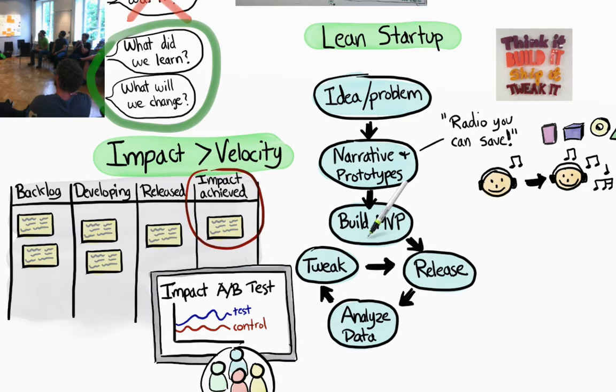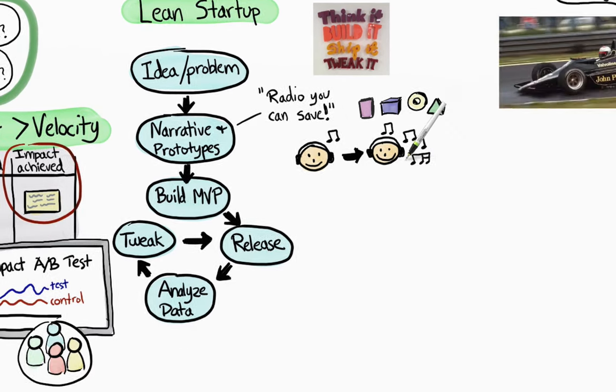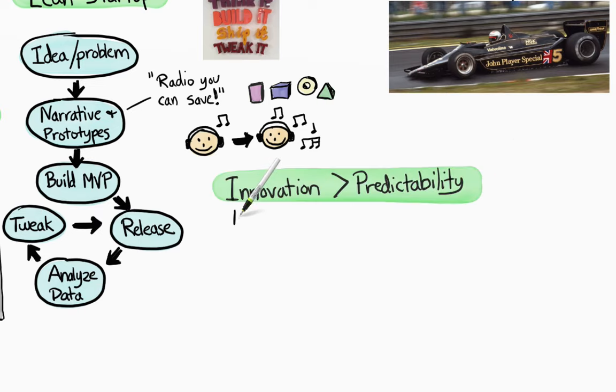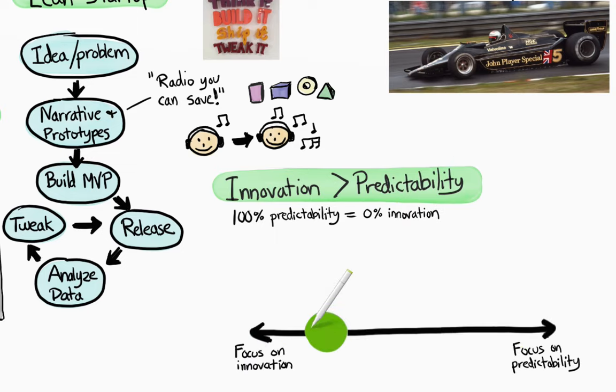So with all this experimentation going on, how do we actually plan? How do we know what's going to be released by which date? Well, the short answer is we mostly don't. We care more about innovation than predictability, and 100% predictability means 0% innovation. On a scale, we'd probably be somewhere around here.